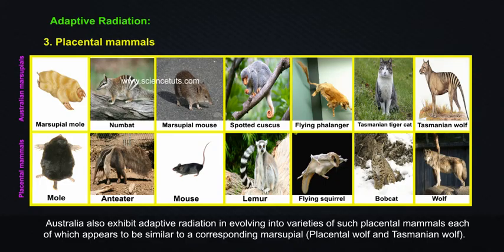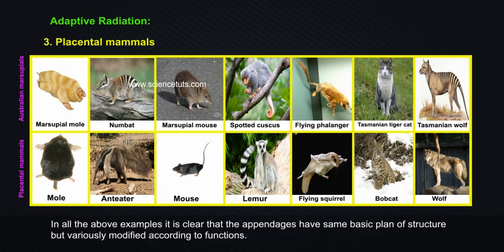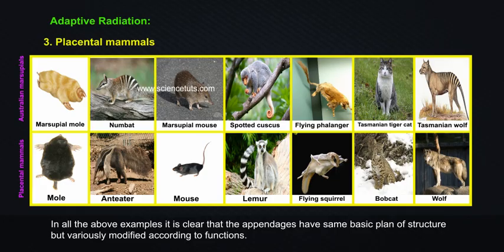Each placental mammal appears to be similar to a corresponding marsupial — for example, the placental wolf and the Tasmanian wolf. In all the above examples, it is clear that the appendages have the same basic plan of structure but are variously modified according to their functions.